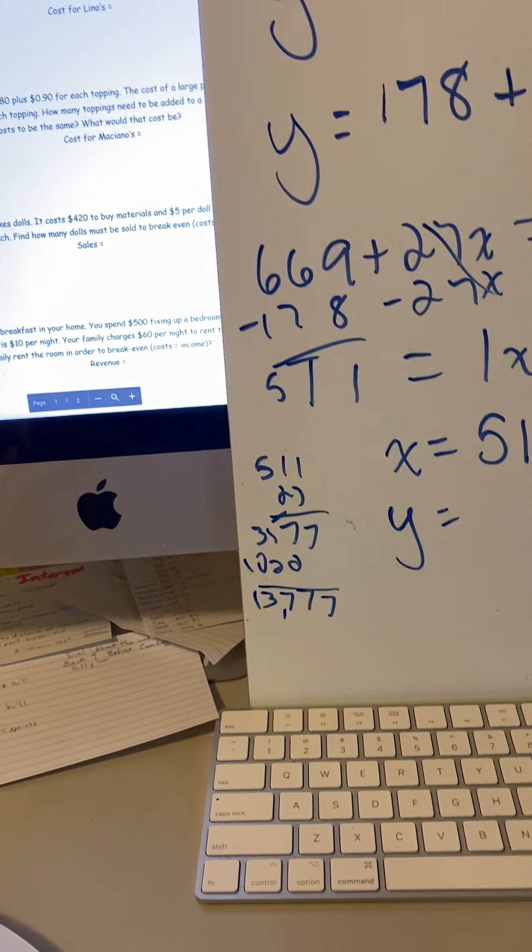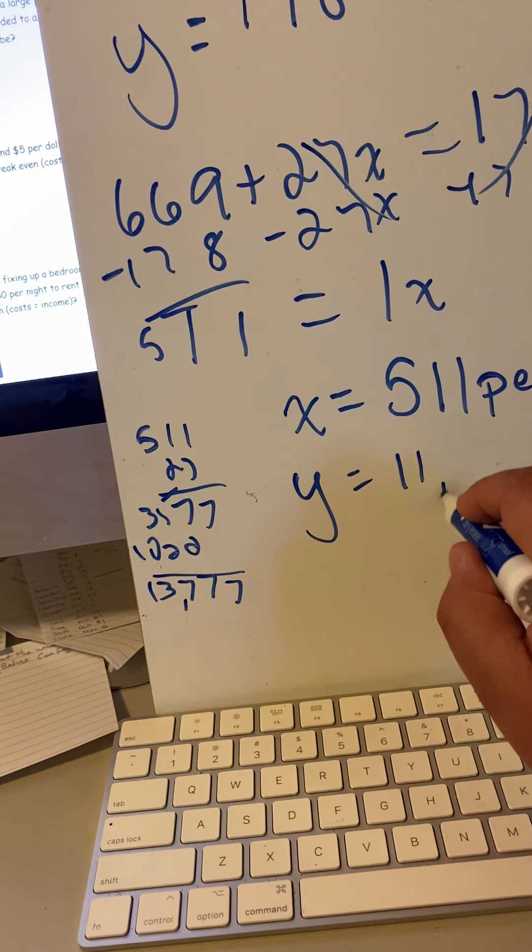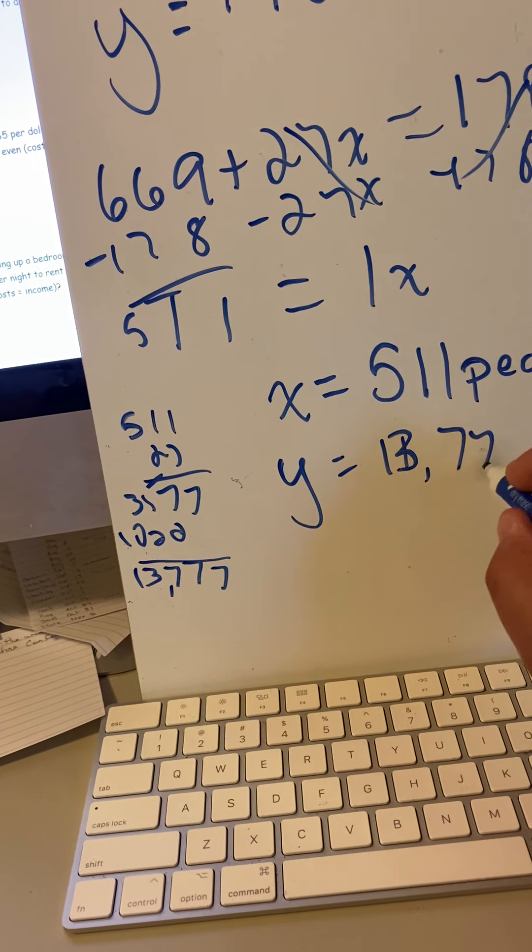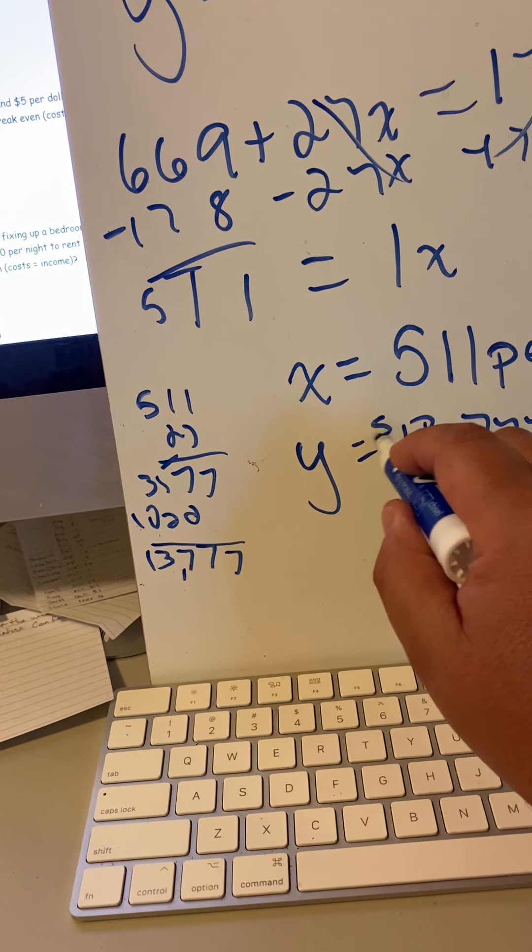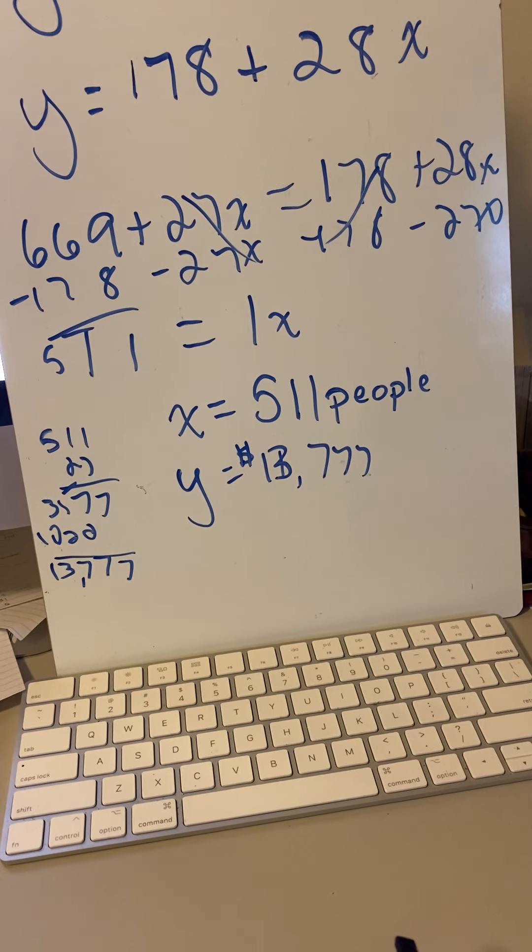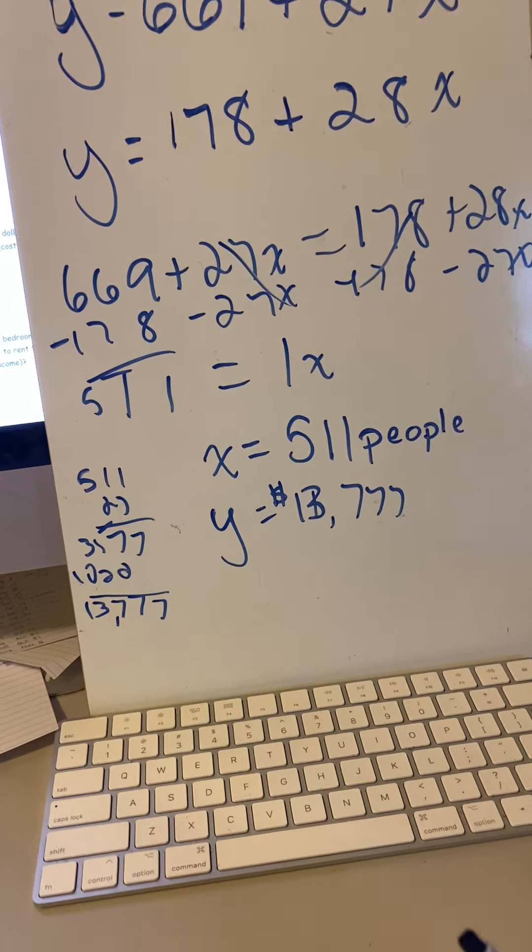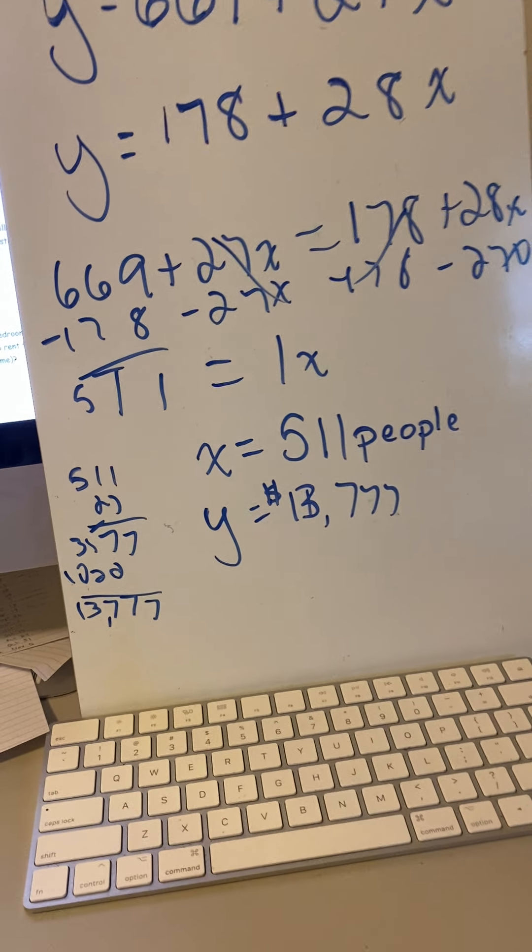So you're telling me that you'd have to spend $13,777 for this anniversary party to feed all 511 people, and that's when it would break even when these two venues would be of the same cost.